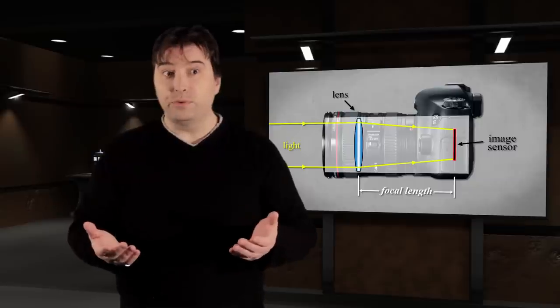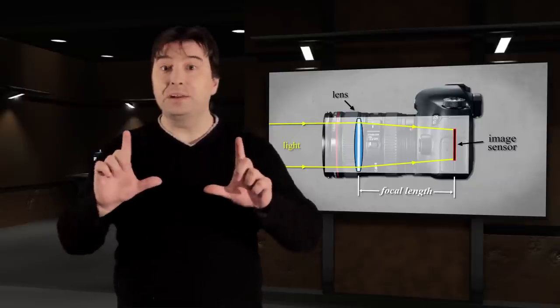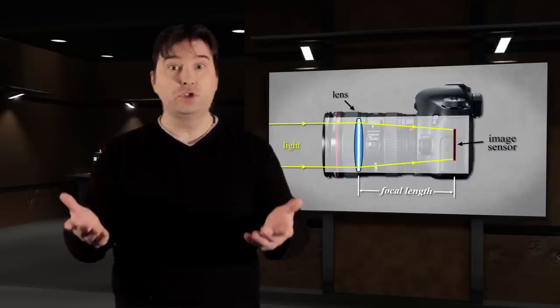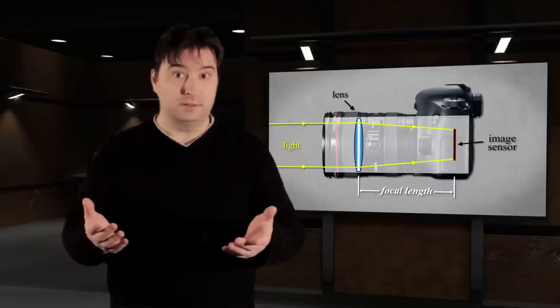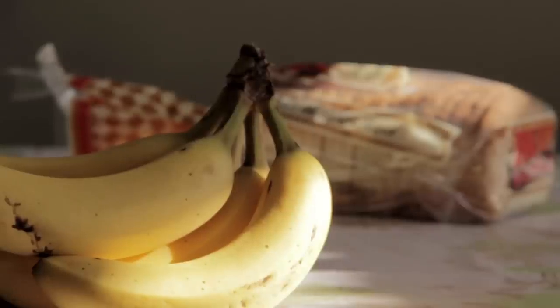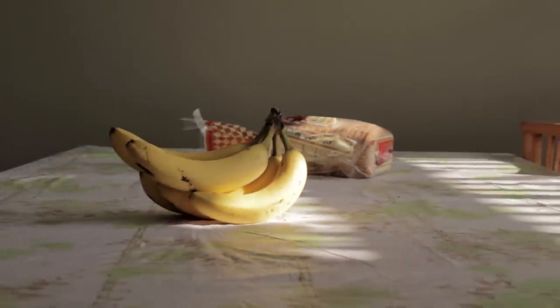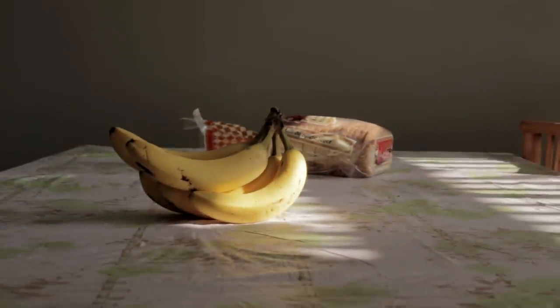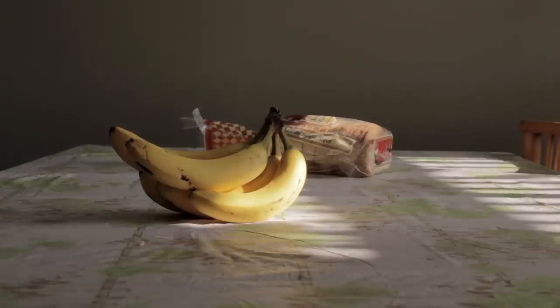Focal length refers to the magnification or zoom of the lens. Zooming in will reduce the depth of field in the shot. Zooming out will increase the depth of field. Some objects that were not in focus when zoomed in will now be in focus.